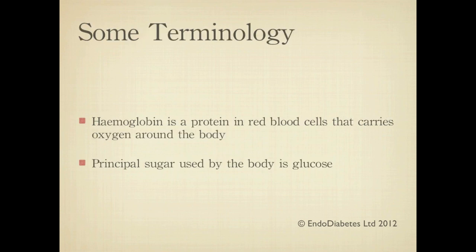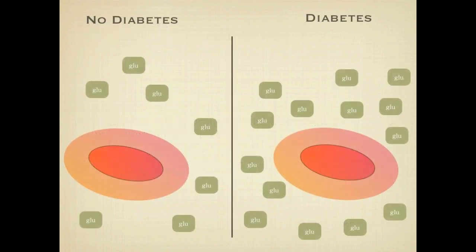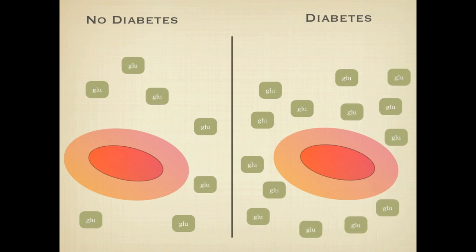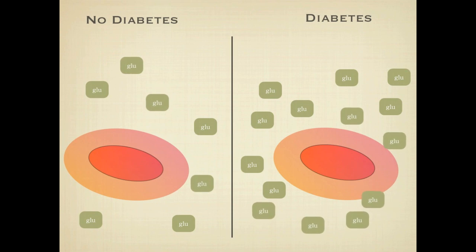Before we start, let us clarify some terminology. Hemoglobin is a protein in red blood cells — it carries oxygen around the body. Glucose is the principal sugar in the body. Both glucose and hemoglobin are in blood vessels. Some of the glucose molecules will attach themselves to hemoglobin in proportion to the blood glucose level — so the higher the glucose, the higher the HbA1c.